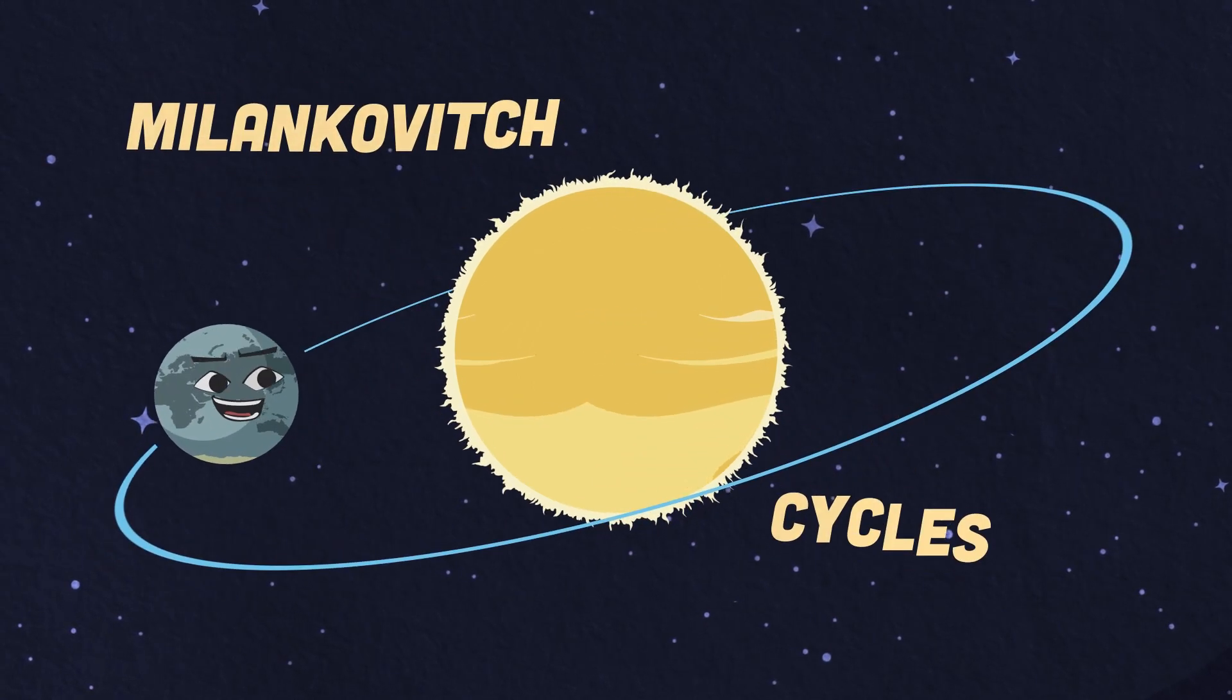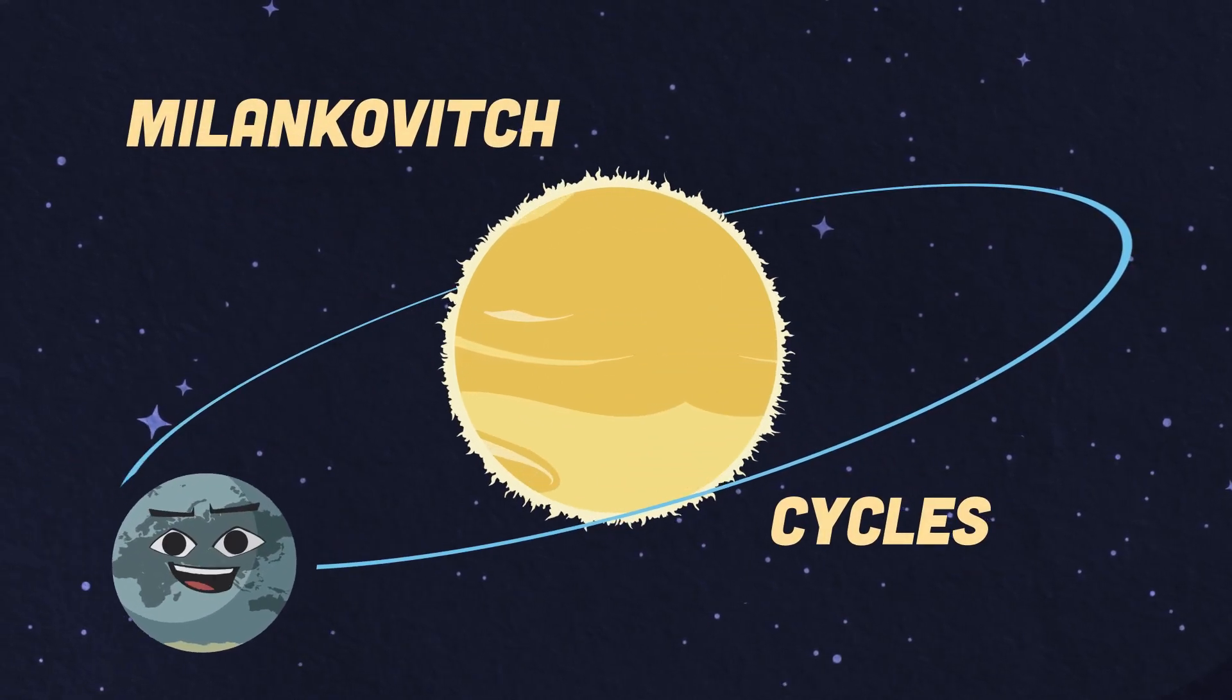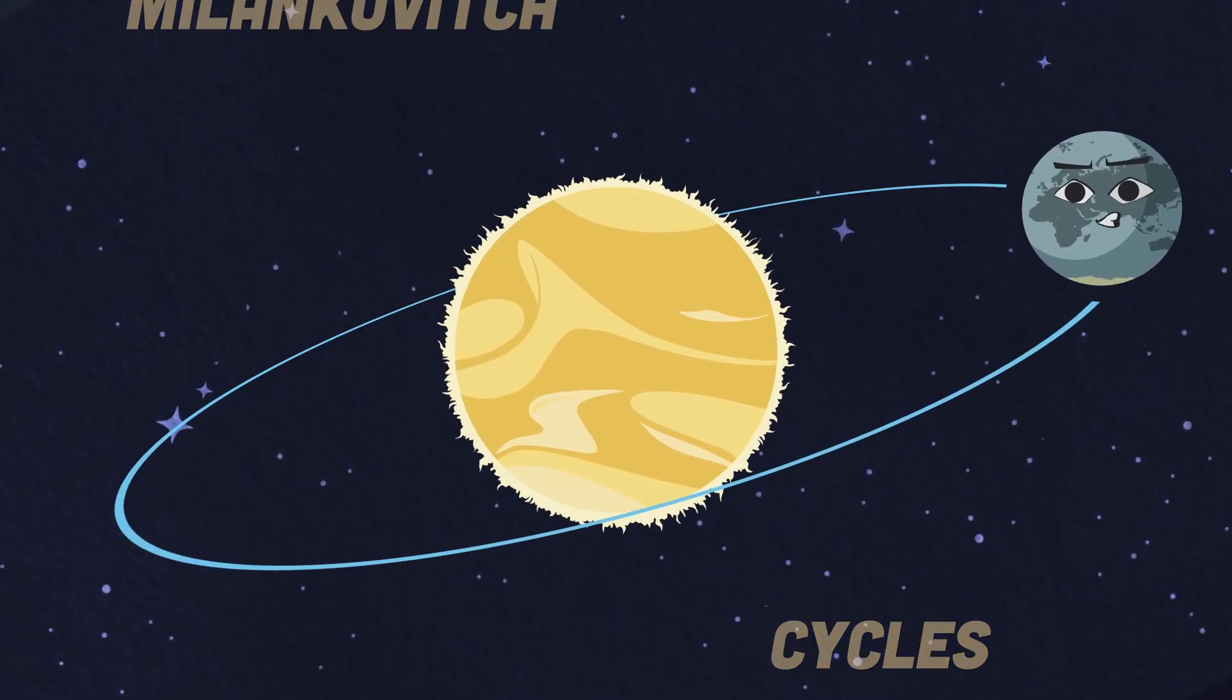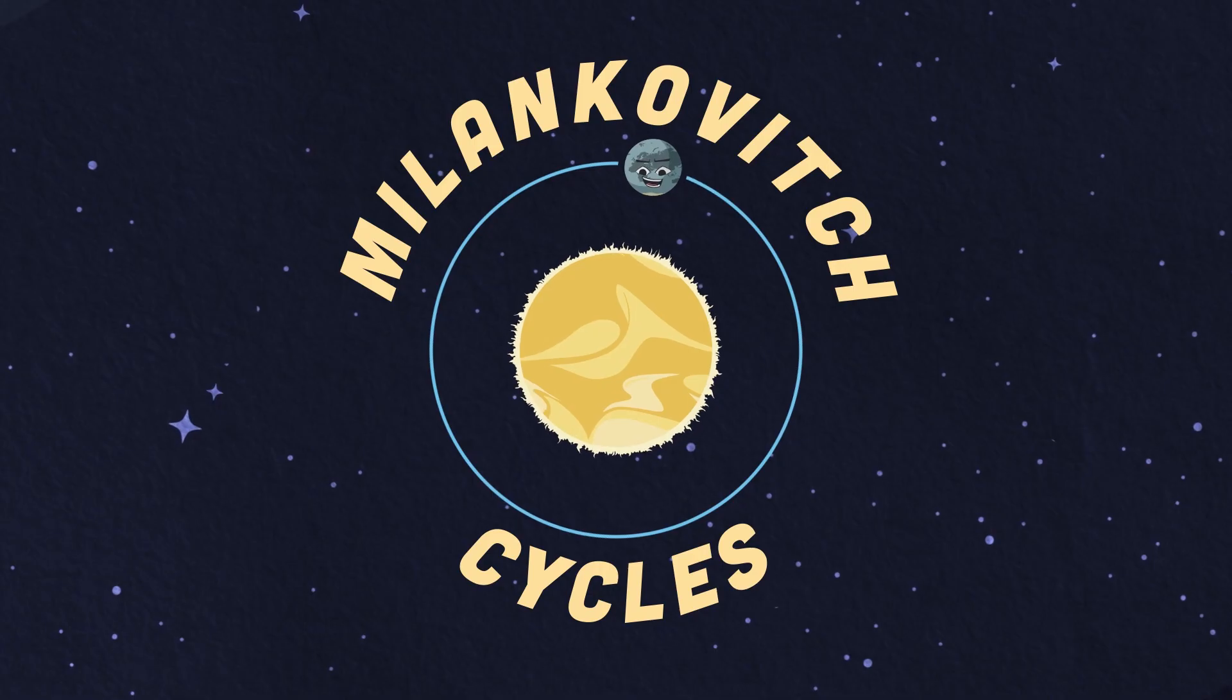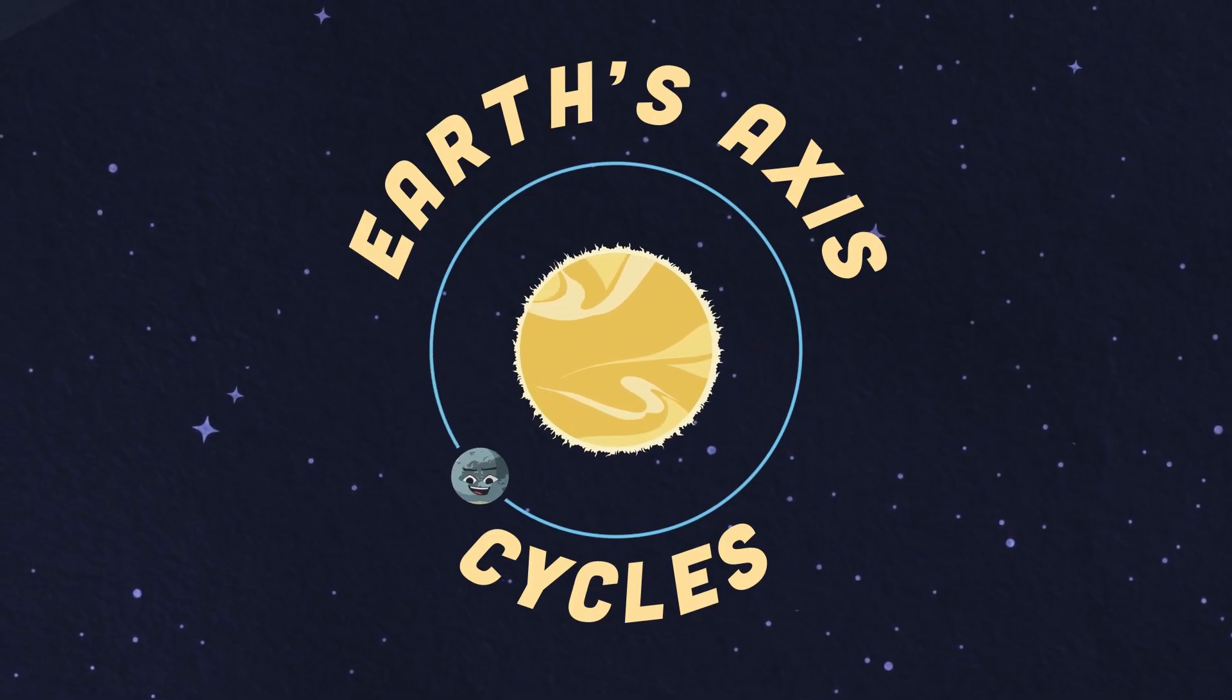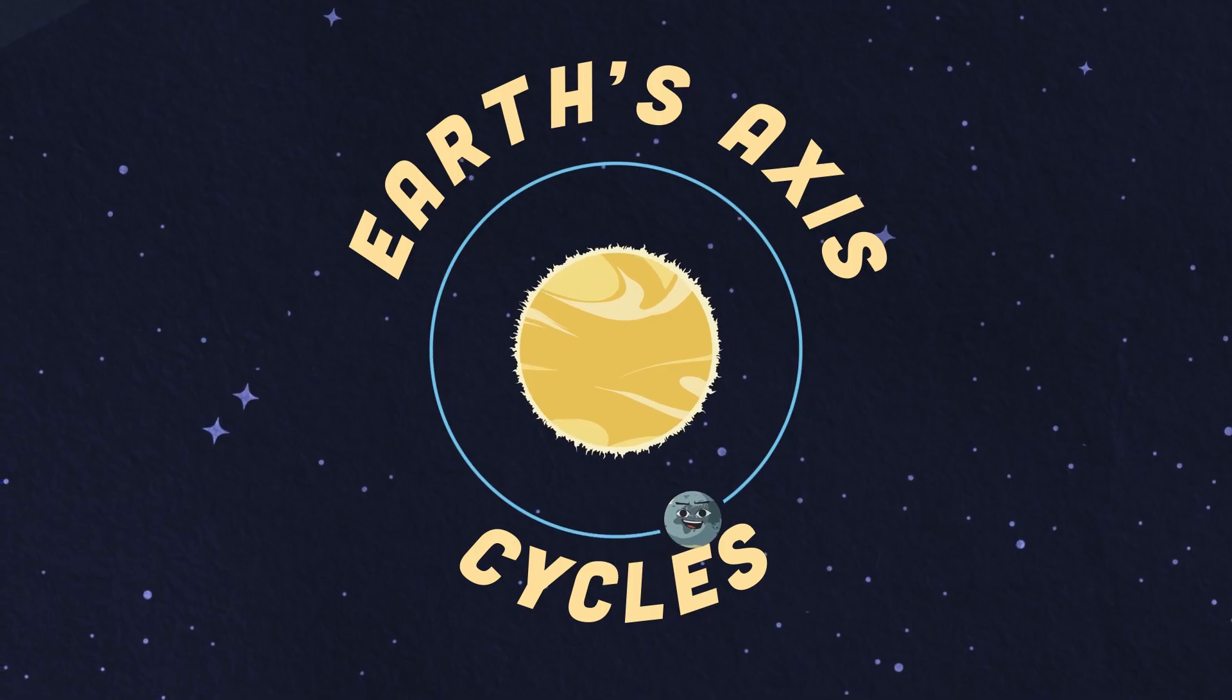What are the Milankovitch cycles and their role in Earth's climate change? Let's take a look at the three cycles and how they rearrange. The Milankovitch cycles are also called Earth's axis cycles. Now let's learn about them all.